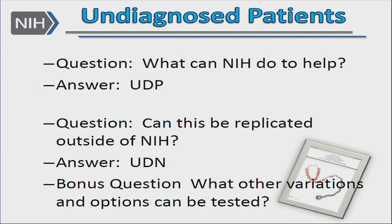But this gave us the opportunity to ask a bonus question: what sort of variations could we be asking in the UDN? What types of other options could be tested to see if they worked as well or perhaps even worked better than the way we were doing things already?